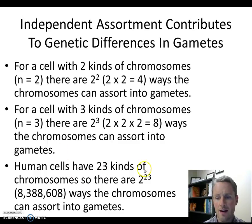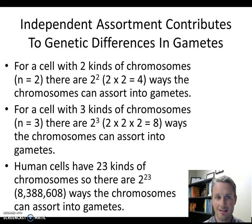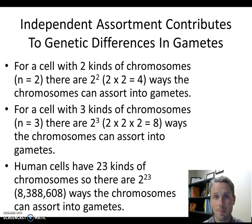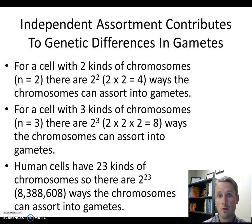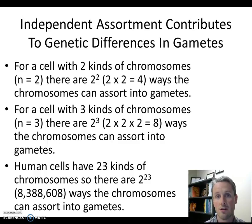Independent assortment alone would be enough to explain why we don't observe identical non-twin siblings from the same parents — there's almost a one in 8.5 million chance that any two children would be genetically identical based on independent assortment alone. But this isn't the only reason gametes differ. We also have crossing over, which makes chromatids different from one another. When we combine crossing over and independent assortment, meiosis never generates two identical gametes in terms of their genetic content.